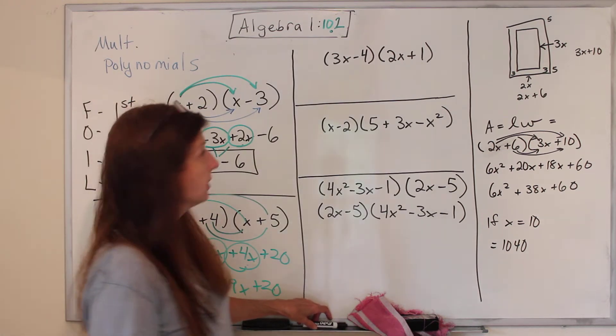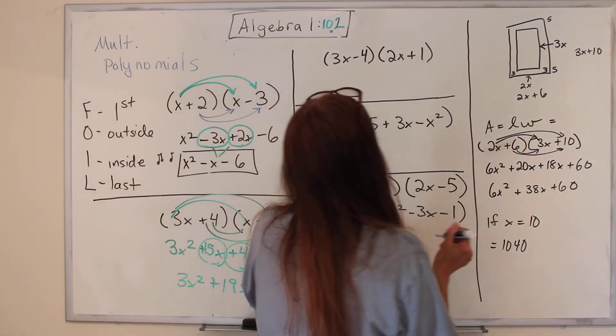So it's 3x squared. 15 plus 4 is 19x plus 20. That's a little hard to read. Let's switch to a different color. We'll go back to black.